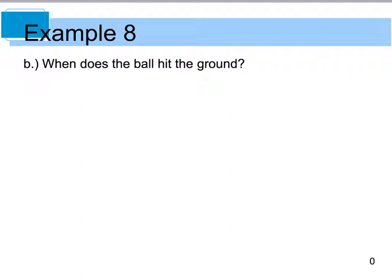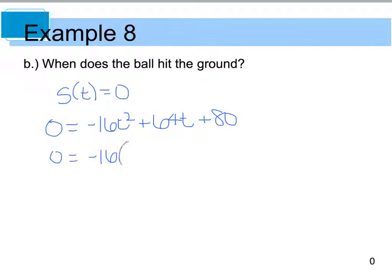Now the last part of this problem says, when does the ball hit the ground? So in order to find out when the ball hits the ground, we know that our height has to equal 0. So in other words, s of t equals 0. So if I say 0 equals negative 16t squared plus 64t plus 80, all I have to do now is solve. So I can actually factor out a negative 16 from everything and I'm left with t squared minus 4t minus 5. And this is all set equal to 0. So I can actually factor this and I get negative 16 times the quantity of t minus 5 times t plus 1. And this is still equal to 0.